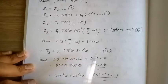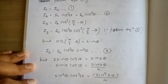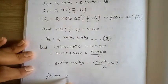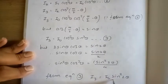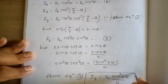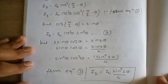Substituting the value of sin²θ·cos²θ from equation 3 into the expression for I3, we get I3 = I0·sin²(2θ)/4. This is the final intensity.